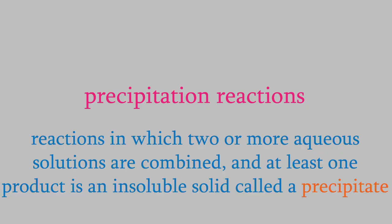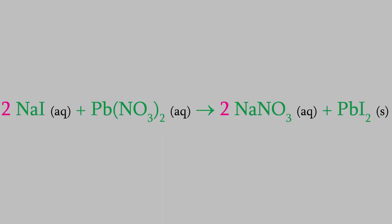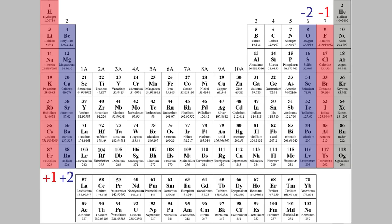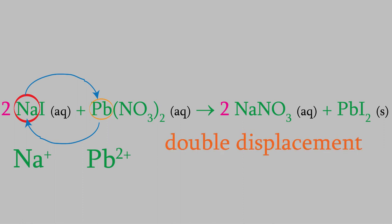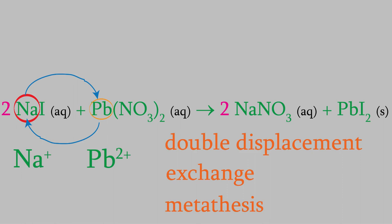Remember, a precipitation reaction always has a solid as a product. If you look at the overall reaction, there's a pattern you'll see very often: the two reactants were sodium iodide and lead-2-nitrate, so the cations were sodium and lead. The two cations had to switch places — sodium paired up with nitrate and lead paired up with iodine. This is called a double displacement reaction, an exchange reaction, or a metathesis reaction. All three terms mean the same thing: the cations in the two reactants switch places.